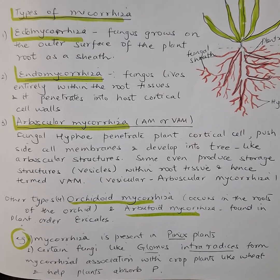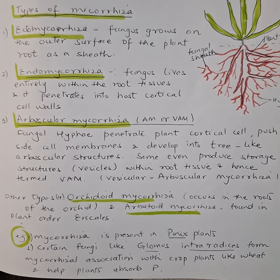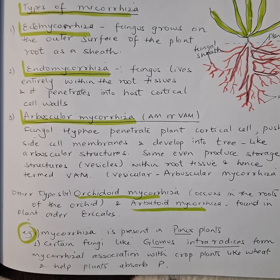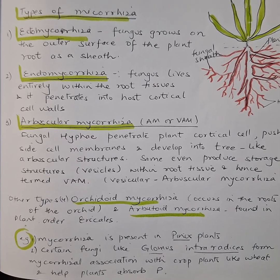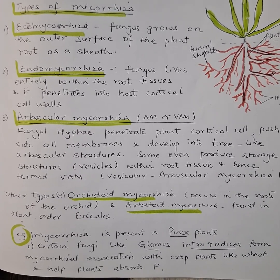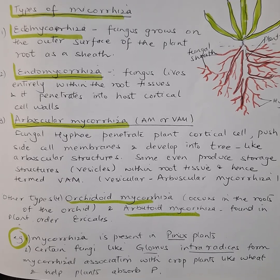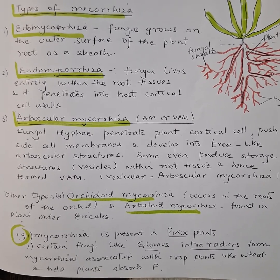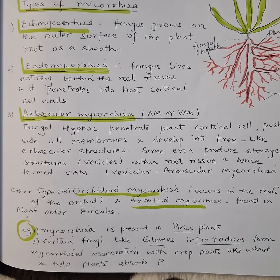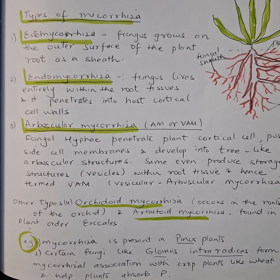Mycorrhiza is present in gymnosperms like Pinus. Certain fungi like Glomus intraradices form mycorrhizal associations with crop plants like wheat and help them absorb phosphorus.